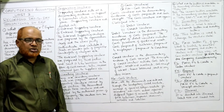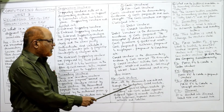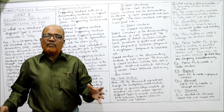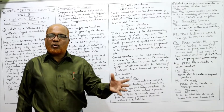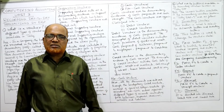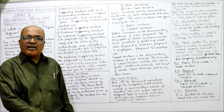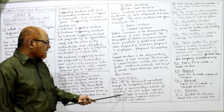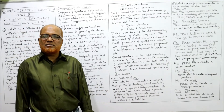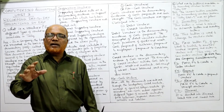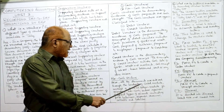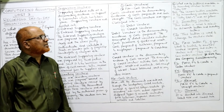For non-cash vouchers, the transactions are entered through the budgetary control module rather than the general ledger module. Non-cash vouchers are used to record adjustments against different types of accounts including fund balances, expenses, revenue, or assets and liabilities. These adjustment transactions are what generate non-cash vouchers.